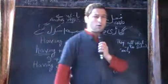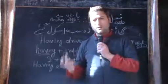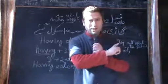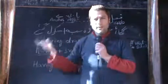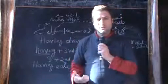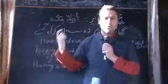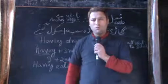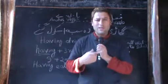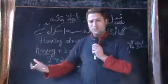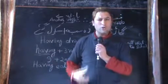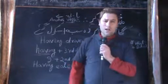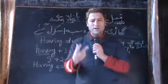So dear students, today we had a lecture about those kinds of sentences where we use two verbs — the first verb is with the sign 'Kar', and the next verb has the sign 'Ya' or 'Ye'. In the next verb, we use the second form of verb, and in the first one, we always start with 'having' and the third form of the verb. Make more exercises with different verbs and send them to our email address: bukharih786@gmail.com.